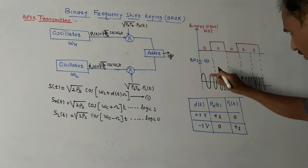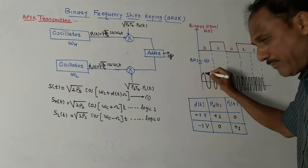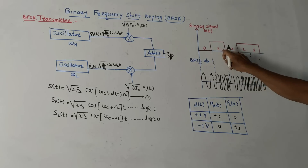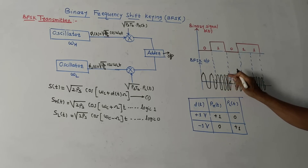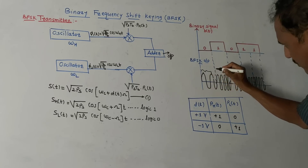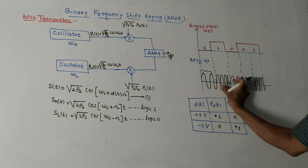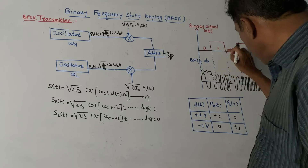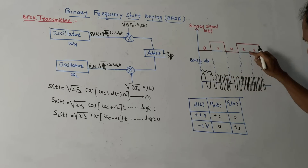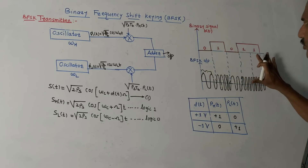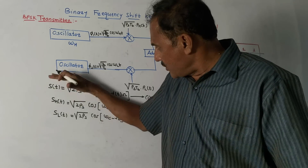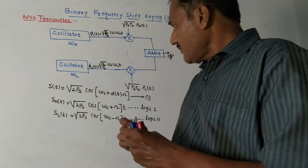In the BFSK output waveform, this part corresponds to low frequency and this part corresponds to high frequency. So logic zero corresponds to lower frequency, and logic one corresponds to higher frequency, and so on. This is the corresponding waveform.